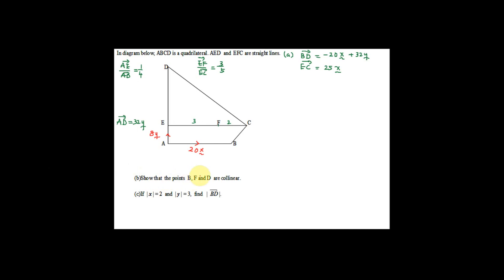For Part B, we need to show that points B, F, and D are collinear, meaning they lie on the same straight line. Many students find the collinear concept confusing. The first step is to find two vectors involving B, F, and D. We already have BD from Part A. Now let's find BF, where BF equals BA plus AE plus EF. BA is negative 20x and AE is 8y.